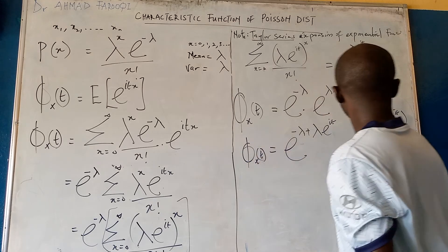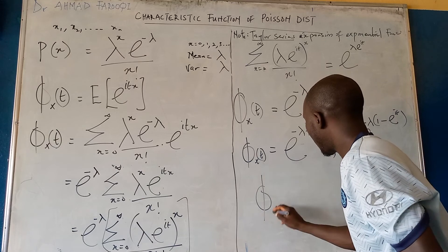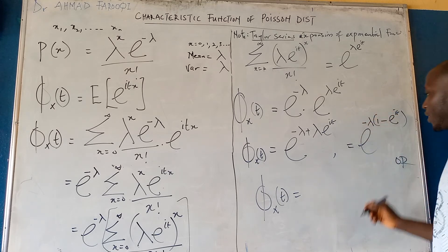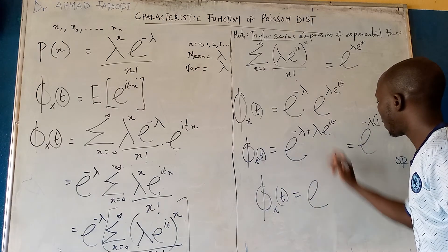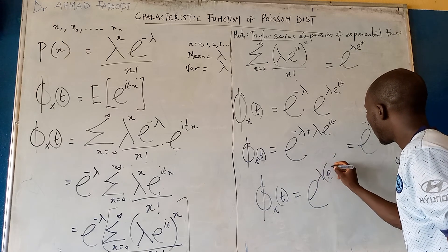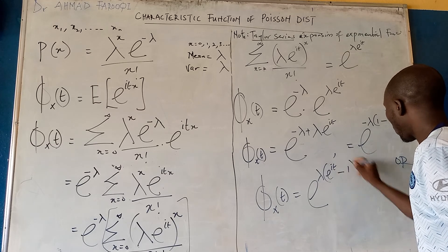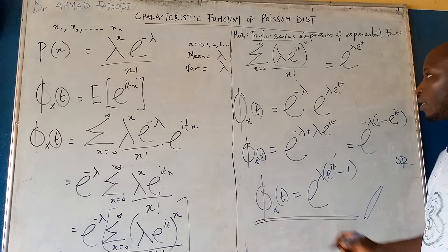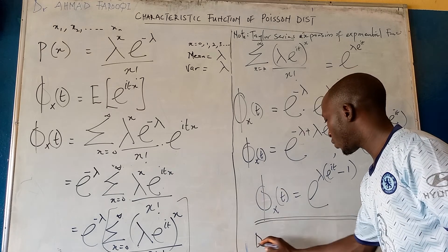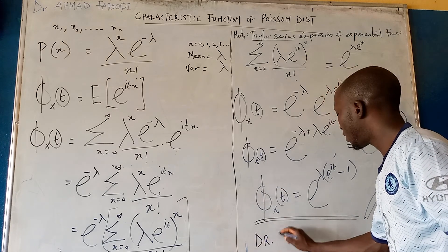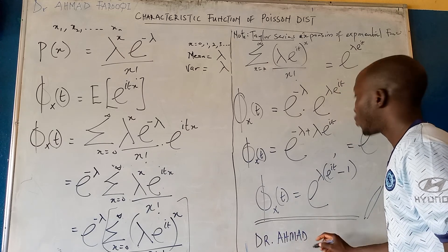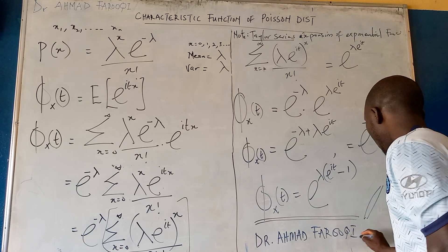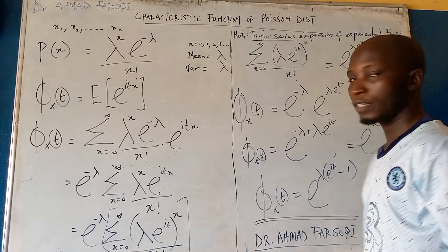We can also write this as phi x of t equals exponential of lambda times exponential i t minus 1, to avoid a negative sign. This is the characteristic function of Poisson distribution. Special appreciation to Dr. Ahmed Farouki for his contribution to this channel. Thank you very much.